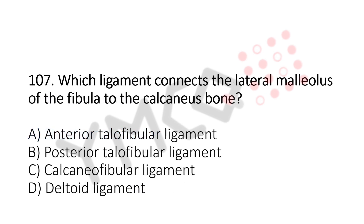Now let's move to question number 107. Which ligament connects the lateral malleolus of the fibula to the calcaneus bone? Option A, anterior talofibular ligament. Option B, posterior talofibular ligament. Option C, calcaneofibular ligament. Option D, deltoid ligament. And the answer is Option C, calcaneofibular ligament.